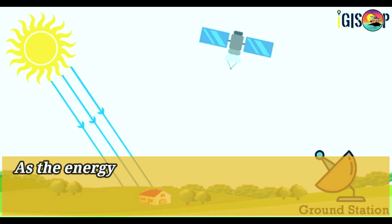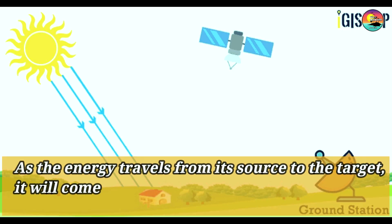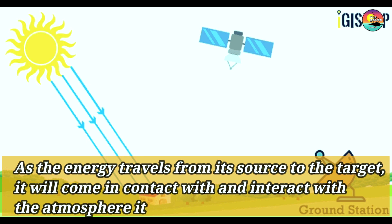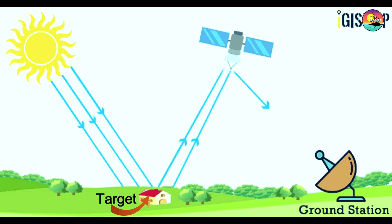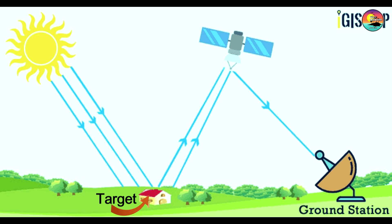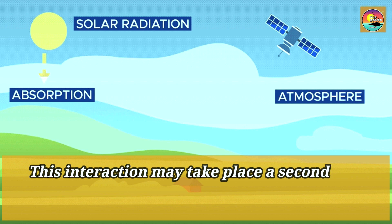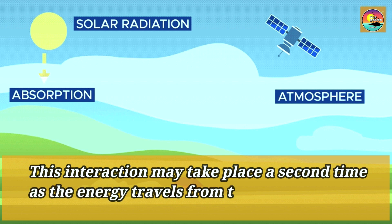As the energy travels from the source to the target, it will come in contact and interact with the atmosphere it passes through. This interaction may take place a second time as the energy travels from the target to the sensor.